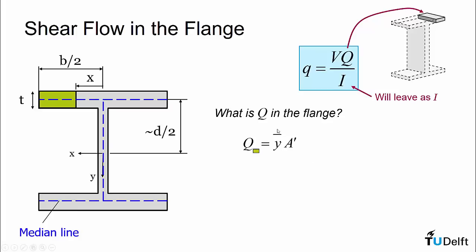So the question becomes what is Q for this green sectioned area? Well Q is y bar times A prime. If you forget what those two things are, y bar is the distance from the neutral axis to the centroid of our area of this sectioned portion. And in this case that will be the height d over 2. A prime is the cross-sectional area of that section, and if we calculate that it will be b over 2 minus x times the thickness.